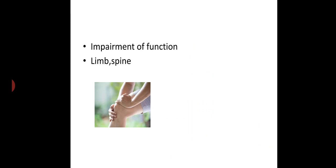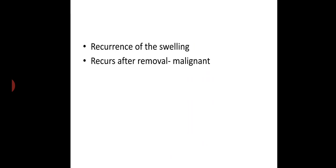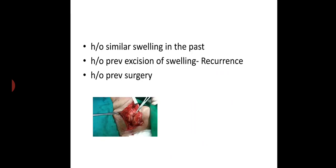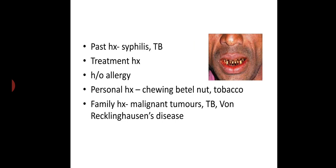Ask about any impairment of function of limbs, spine, vertebrae, and other joints. Ask about recurrence — if the swelling recurs after removal, suspect malignancy. Also ask about history of similar swelling in the past, previous excision, and previous surgery. In past history, ask specifically about syphilis, tuberculosis, treatment history, and allergy. In personal history, ask especially about chewing betel nut or tobacco in case of oral malignancy. For family history, ask about malignant tumors, tuberculosis, and von Recklinghausen's disease.